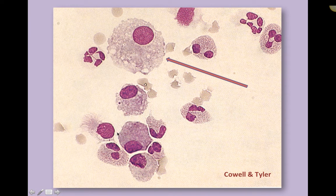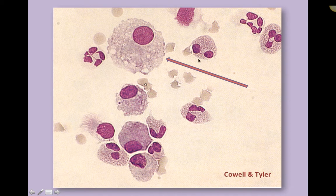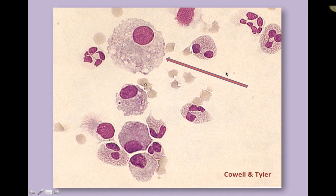This cell is called a ciliated columnar epithelial cell — it has a round purple nucleus and a long cytoplasm with little hairs at the end. It's specific to the respiratory tract. I'm pointing it out now because this picture will come back in tests and quizzes. And here are neutrophils, potentially eosinophils based on their coloration, and then a giant macrophage.